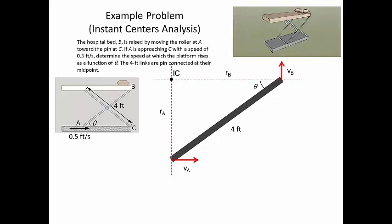We label the radius from the instant center to point A as R_A, and to point B as R_B. Since the velocity of A equals the angular velocity of member AB times R_A, and V_A is 0.5, we solve for the angular velocity: omega_AB equals 0.5 divided by R_A. The radius R_A equals 4 times the sine of theta. Substituting, the angular velocity of AB equals 0.5 divided by (4 sin theta).